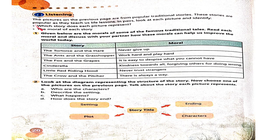Now we have to tell the moral of each story. The moral of The Ant and the Grasshopper is: Work hard and play hard. The moral of The Lion and the Mouse is: Do good and have good. The moral of Little Red Riding Hood is: Never trust strangers. The moral of The Boy Who Cried the Wolf is: Never tell a lie. The moral of The Fox and the Grapes is: Greed is a curse. The moral of Cinderella is: Be honest. The moral of The Hare and the Tortoise is: Slow and steady wins the race.